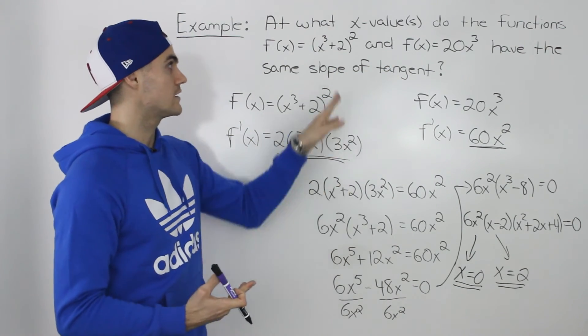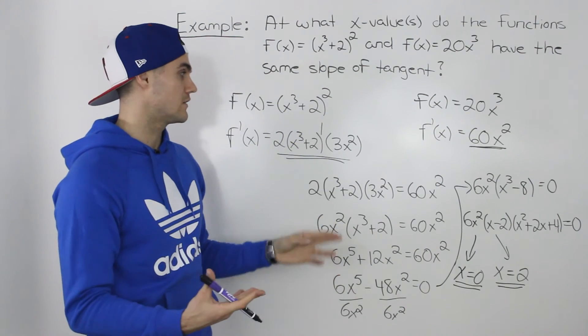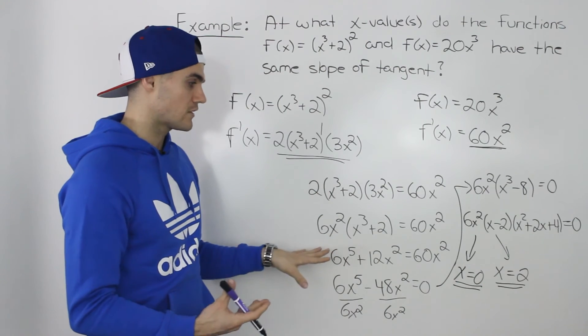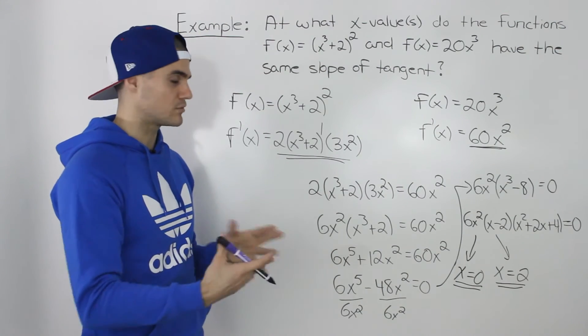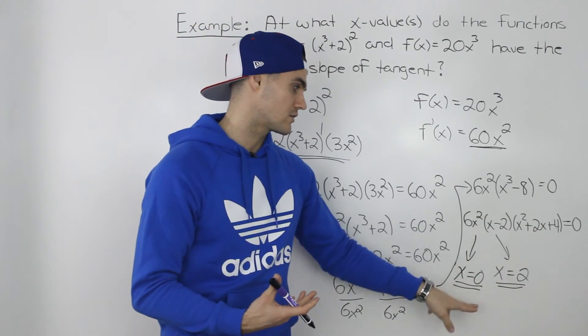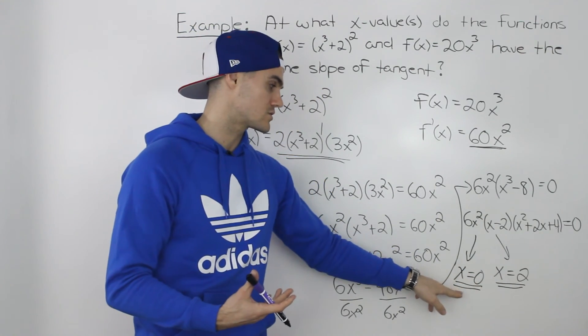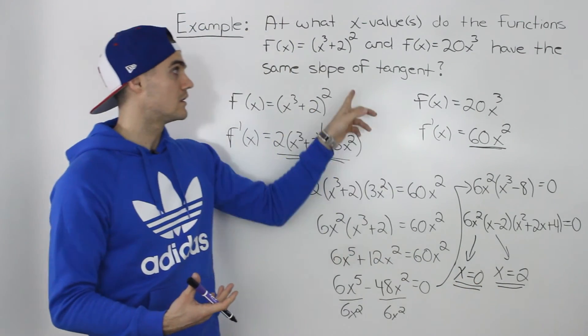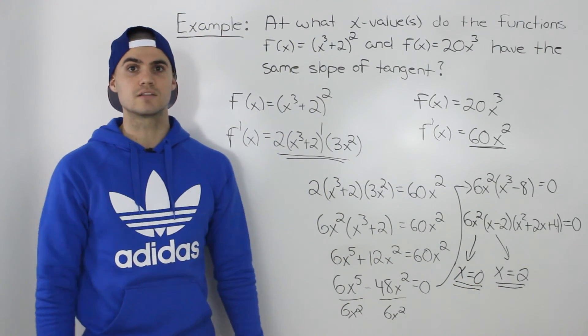So the way you do that is you take both the functions, find their derivatives, make them equal, simplify everything, bring it all over to one side, simplify the like terms, factor it as much as you can. And then from those remaining factors, you get your x values. So at an x value of 0 and at an x value of 2, these slopes of the tangents are the same.